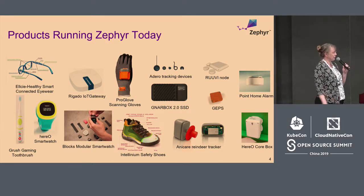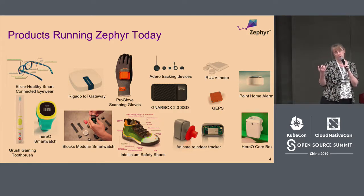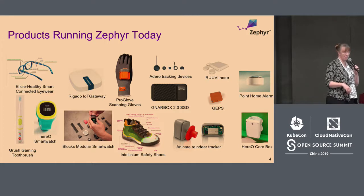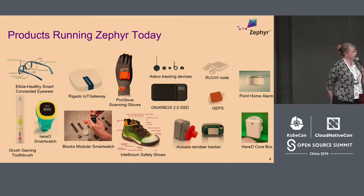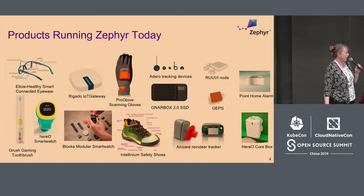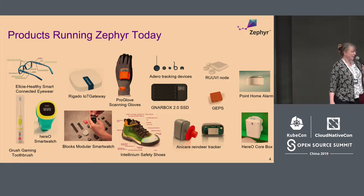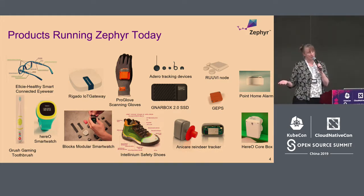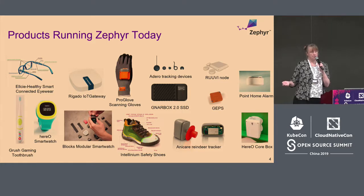Gnarbox is an SSD drive that offloads pictures — it was a big Kickstarter campaign that made about ten times its funding target. As you can see, Zephyr is hitting products, and some of them are winning awards. The Interlinium shoes for noisy factory floor environments actually have four processors in them with a very interesting architecture. Oticon, one of our platinum members, will be talking in August about how they're using Zephyr in the next generation of hearing aids. So it's not only coming into startups — major companies are building their key product lines around it.